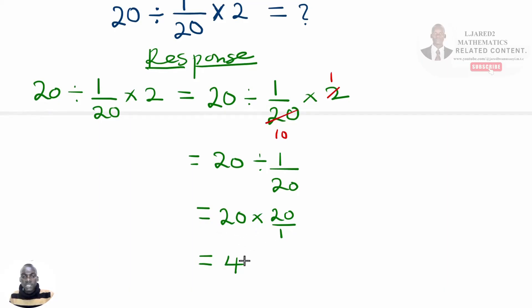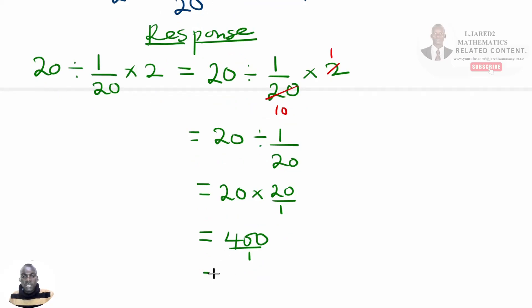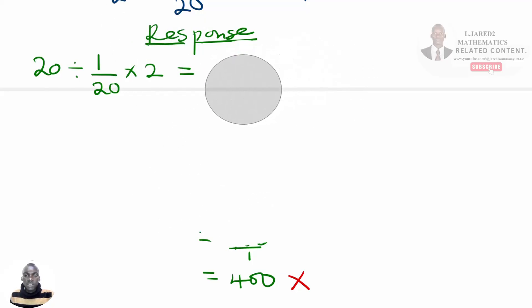Which gives us 400 divided by 1 to give us the final answer to the expression as 400. But guess what? This answer is completely wrong. It is not the correct one. So let us have the correct response to this question.